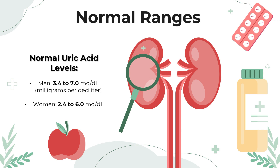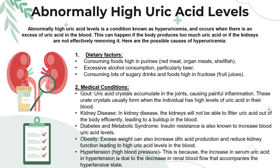Now that we know the normal ranges, let's take a closer look at abnormally high and abnormally low levels of uric acid in the blood. Abnormally high uric acid levels is a condition known as hyperuricemia, and it occurs when there is an excess of uric acid in the blood. This can happen if the body produces too much uric acid or if the kidneys are not effectively removing it.